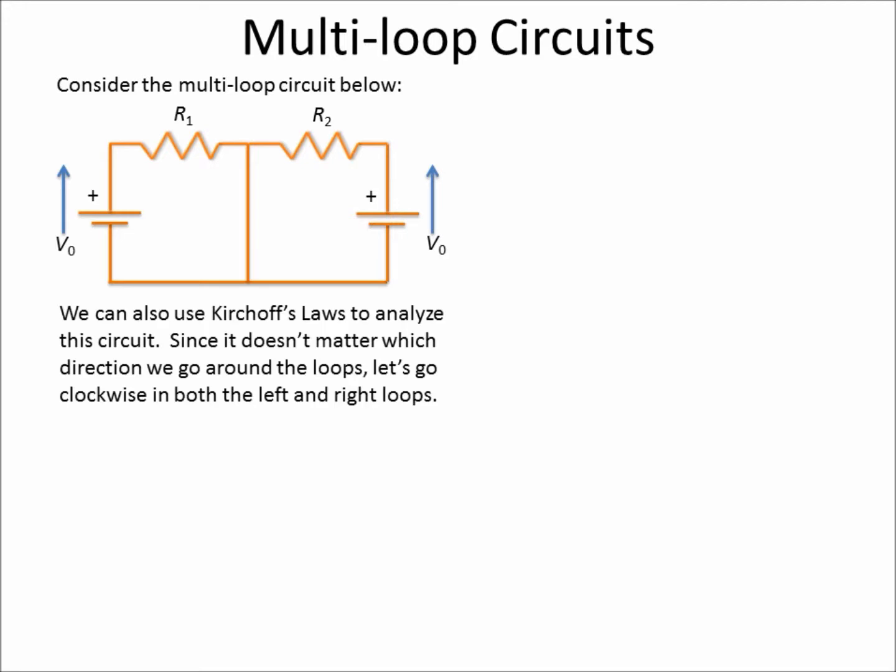We're going to use Kirchhoff's laws to analyze this. And when we use Kirchhoff's loop law, we have to choose a way to go around the loop, and it doesn't matter which way we do that. We can see we have two natural loops, one over here, one over on the right side.